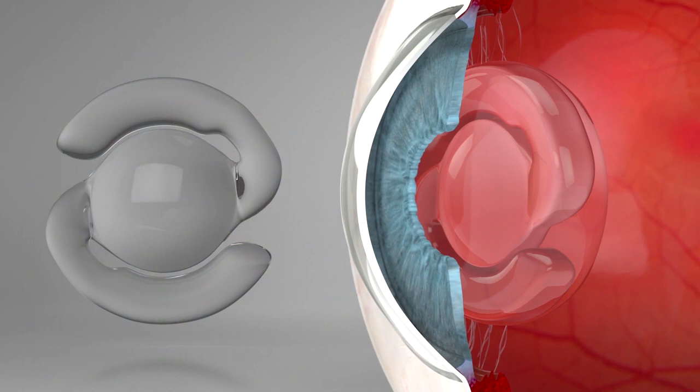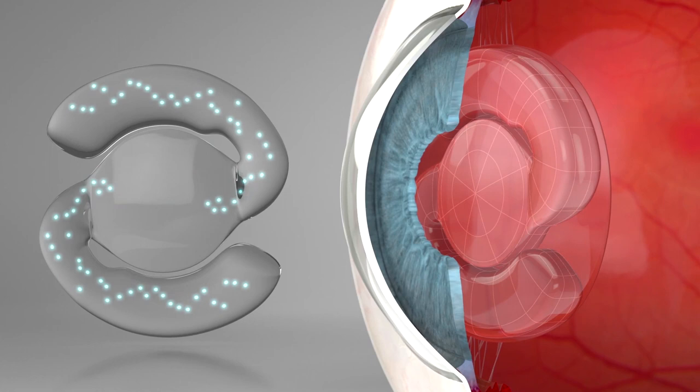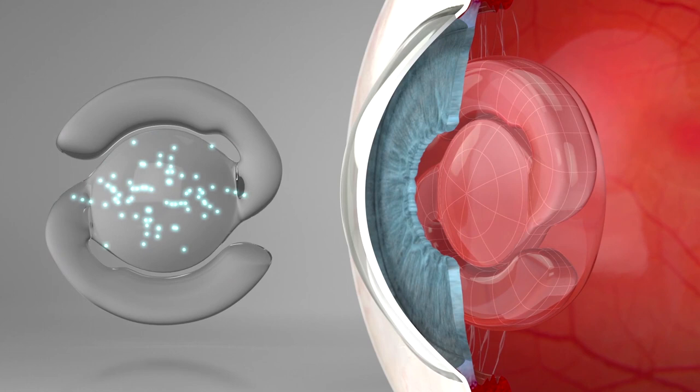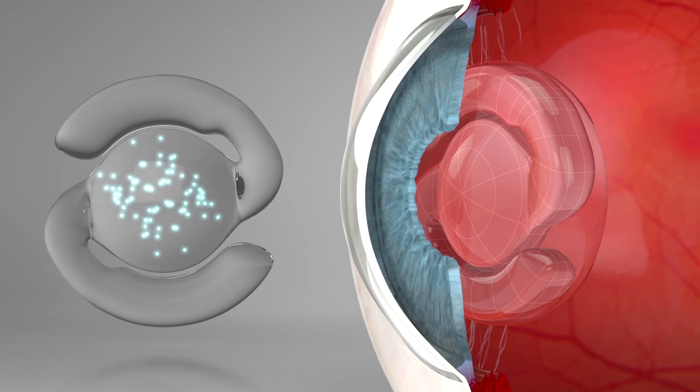By utilizing the natural muscular forces in the eye, the fluid contained within the FluidVision lens is redistributed, affecting a change in its curvature and shape. As a result, accommodation via the FluidVision lens is achieved in much the same way the human eye accommodates.